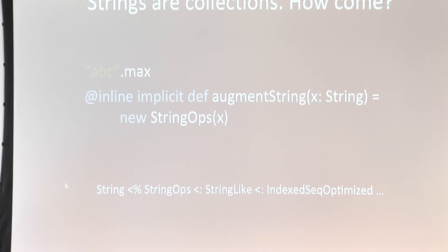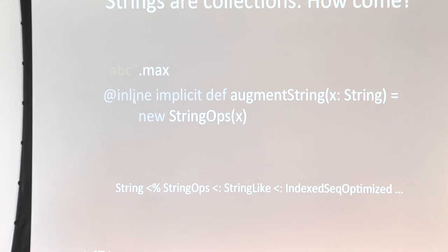Strings are in fact collections. The way this works is via the augmentString function inside Predef. Predef is a class where you'll find many of the functions and conversions that make Scala interoperate so well with Java. What happens is that String is converted to StringOps, which wraps it and provides additional operations. StringOps is a subclass of StringLike, which in turn is an IndexedSeqOptimized — there are more than ten layers of abstraction in that web of traits.